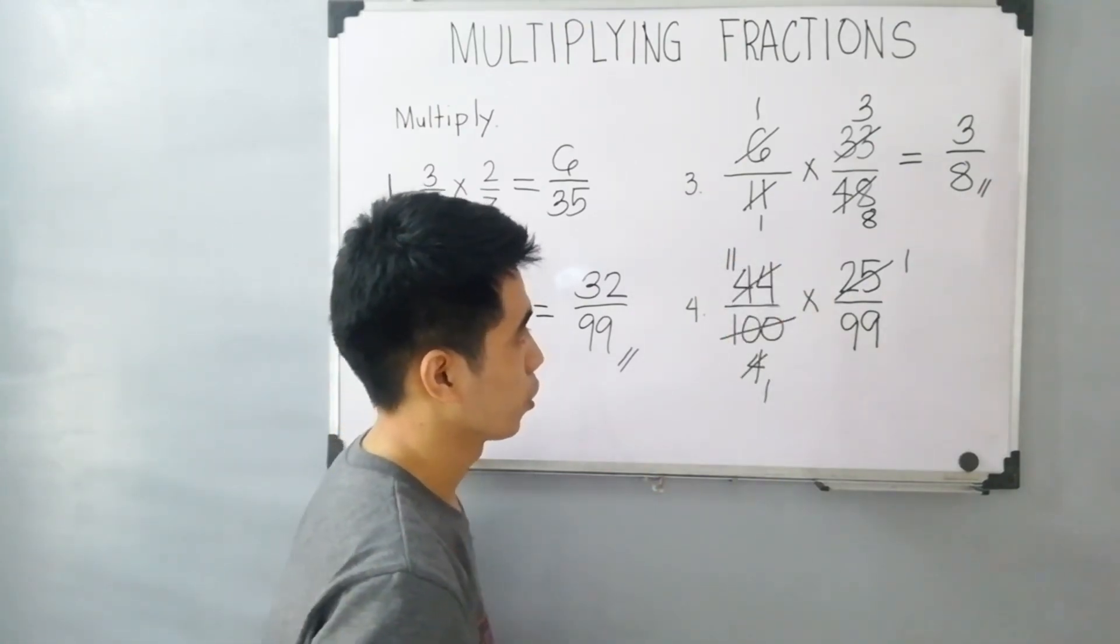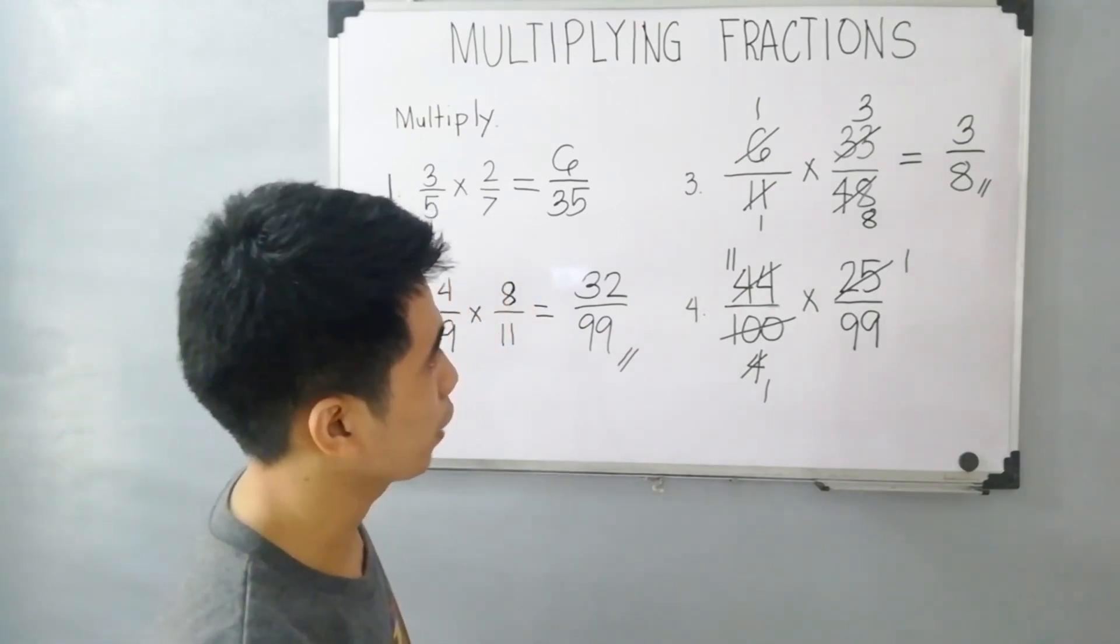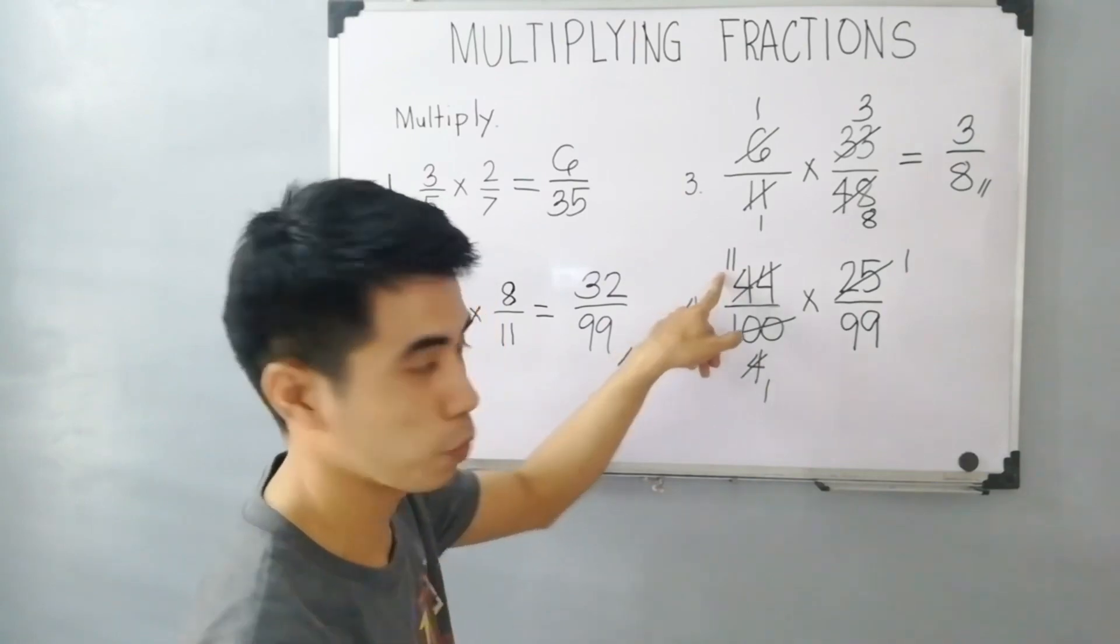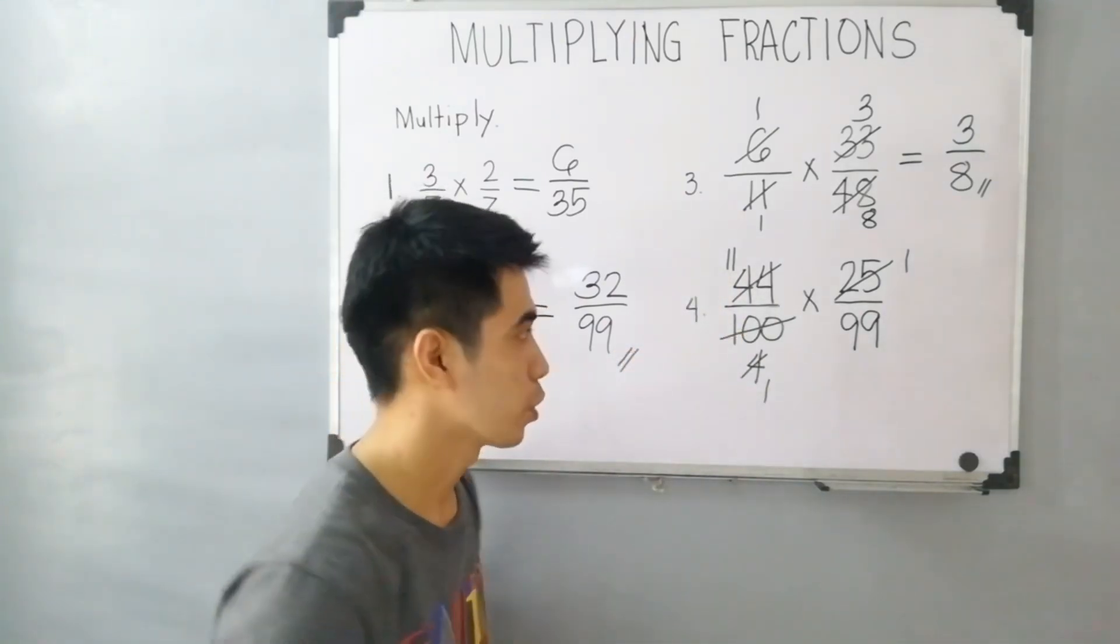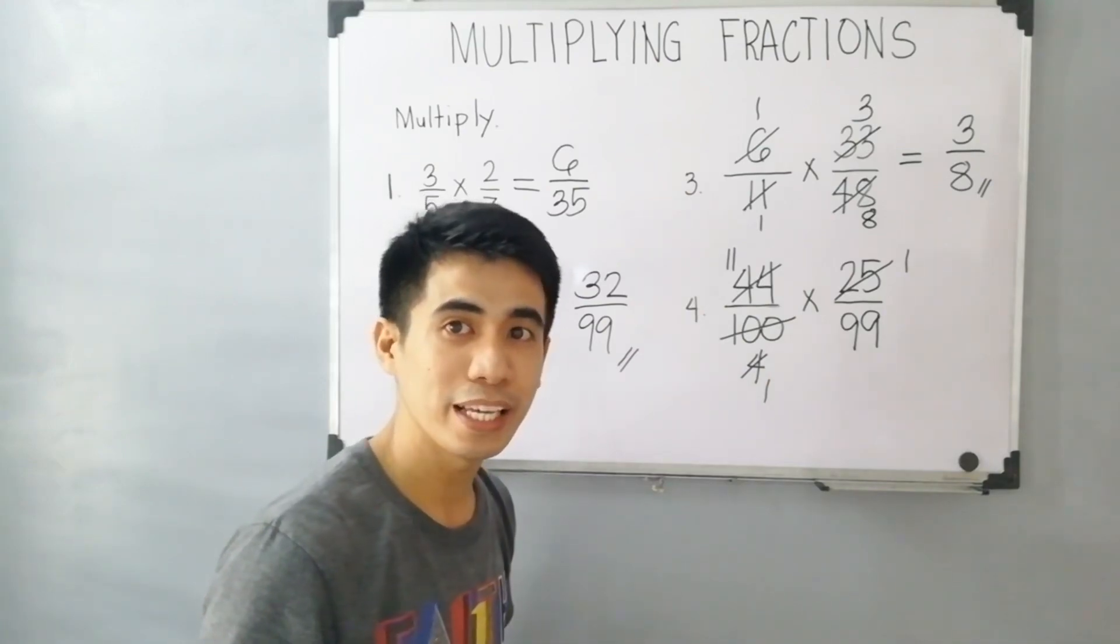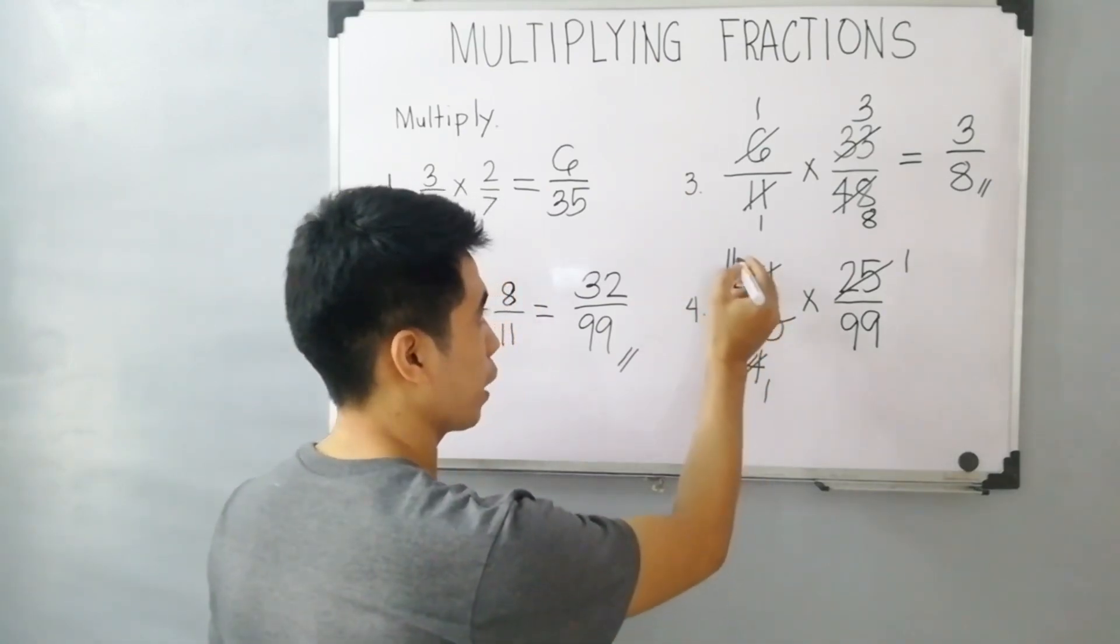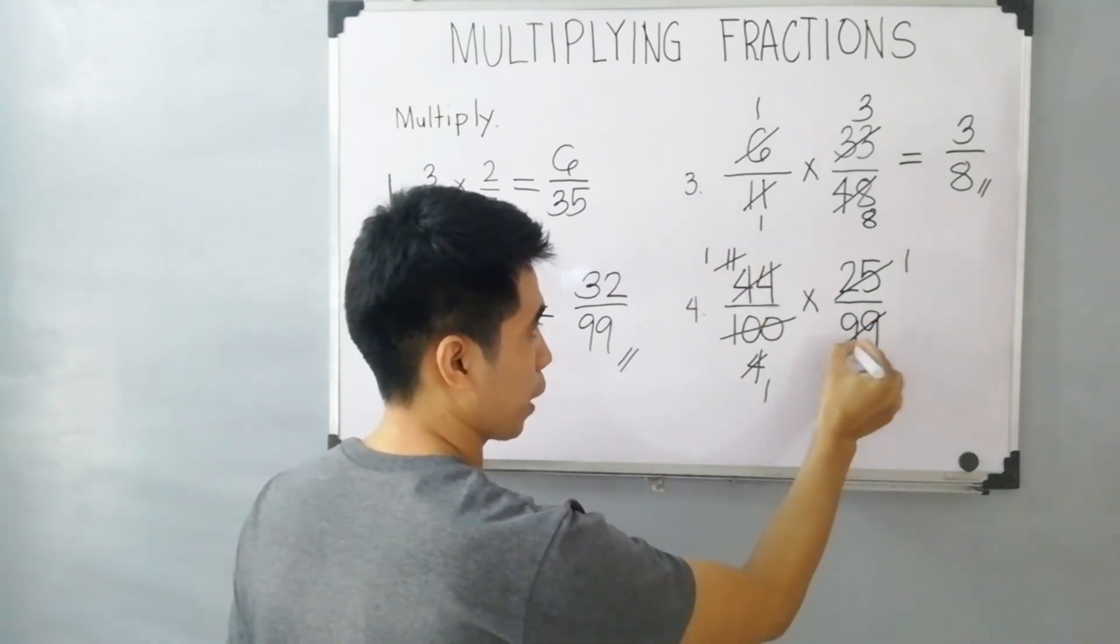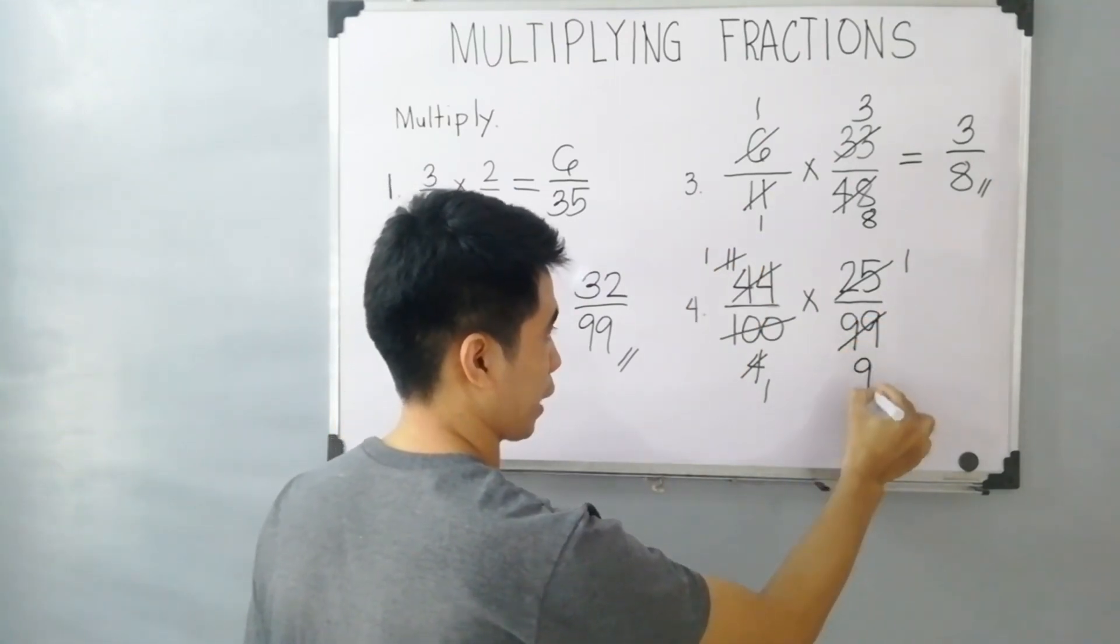Do we have any other factors? Yes, 99 and 11. We can divide 99 and 11, since 11 and 99 are divisible by 11. 11 divided by 11, this is equal to 1. 99 divided by 11, this is equal to 9.